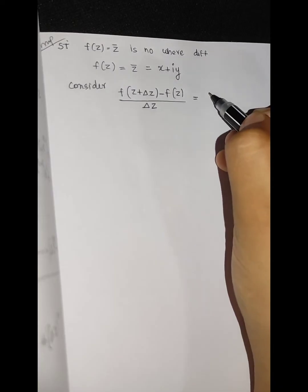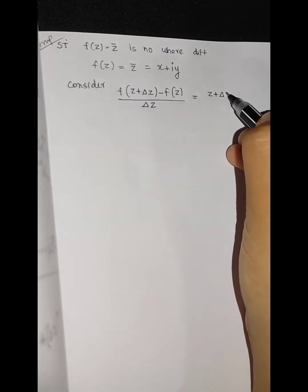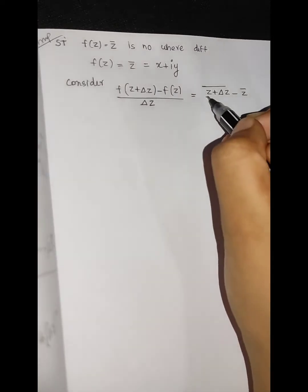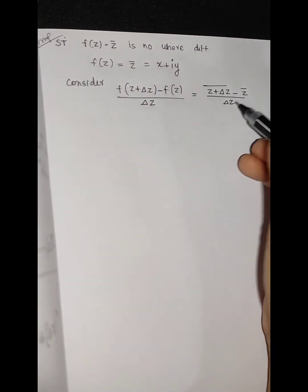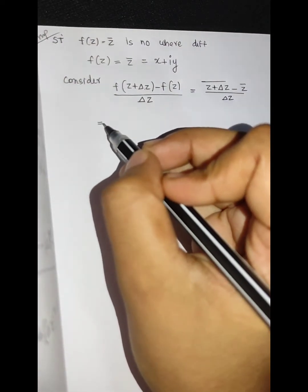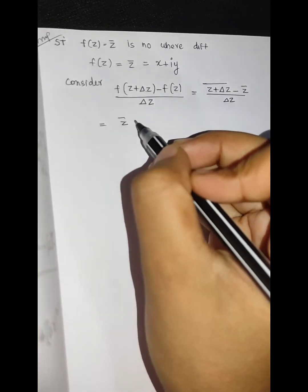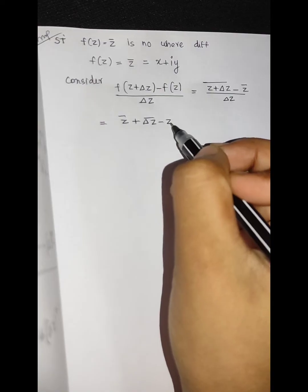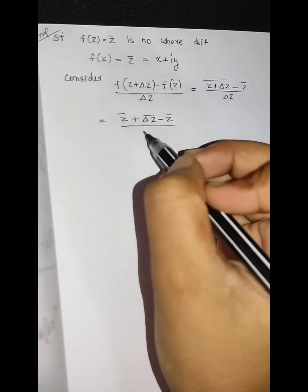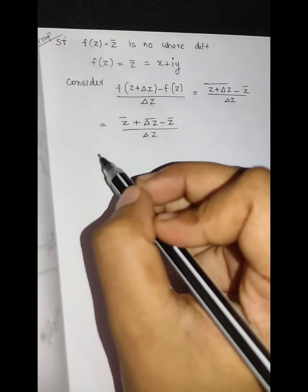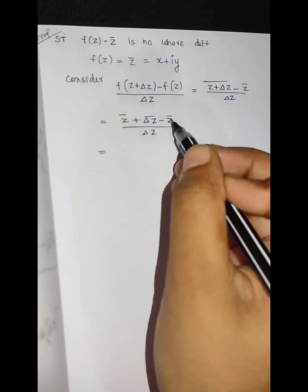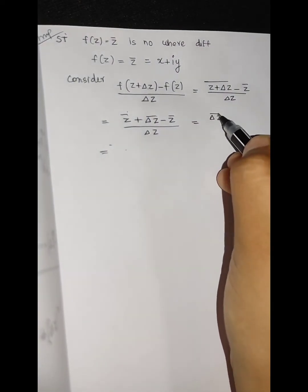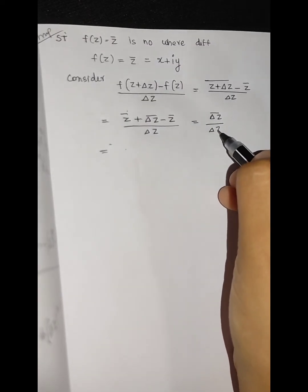z bar is z plus delta z bar minus z bar, divided by delta z. So this simplifies to delta z bar divided by delta z.